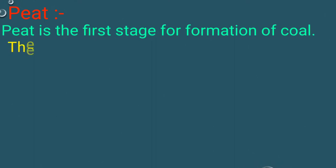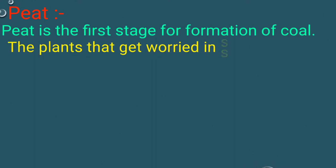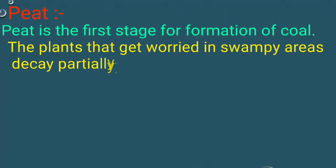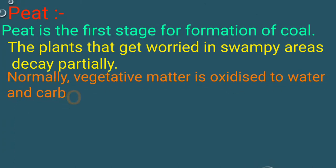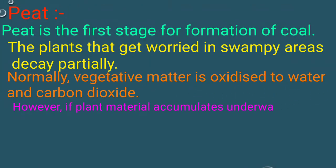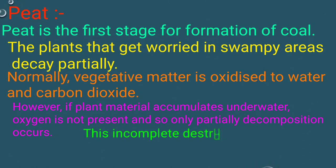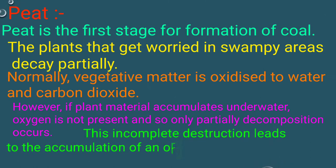Peat is the first stage in the formation of coal. The plants that got buried in swampy areas decay partially. Normally, vegetative matter is oxidized to water and carbon dioxide. However, if plant material accumulates underwater, oxygen is not present and so only partial decomposition occurs. This incomplete destruction leads to the accumulation of an organic matter called peat.